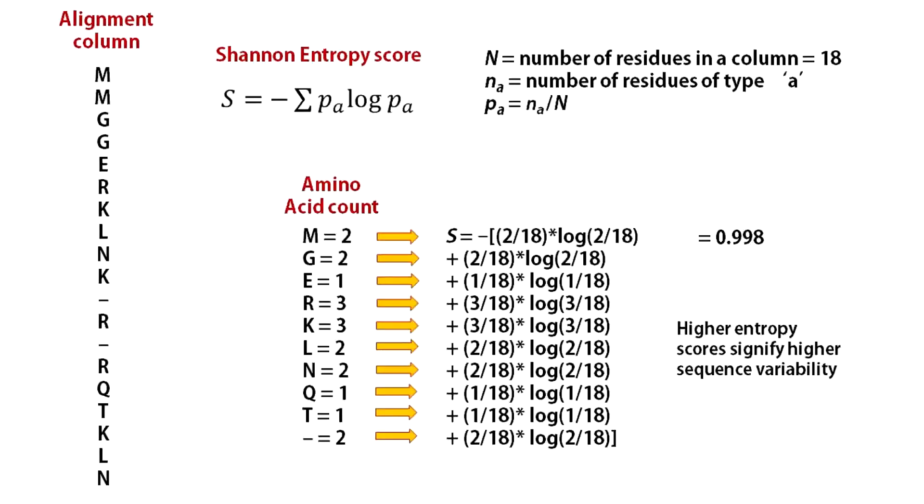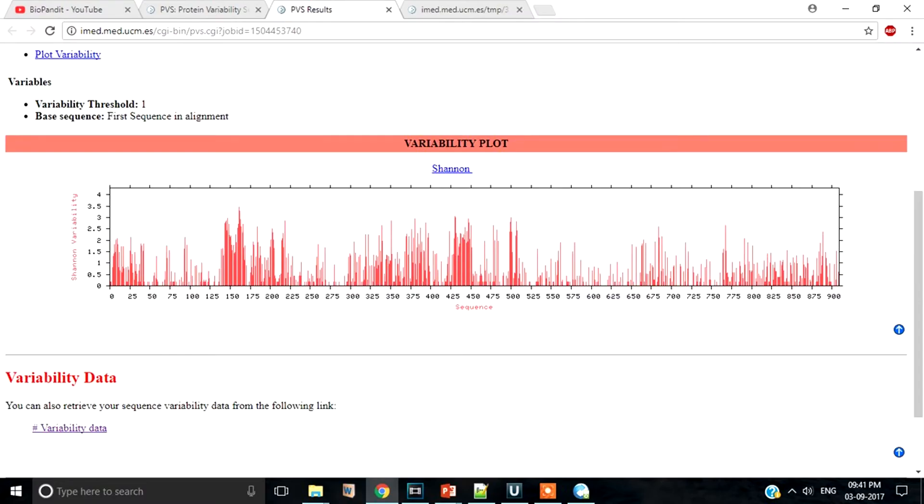What are these Shannon entropy scores and what do their values signify? You have an alignment column. You have amino acids and gaps. You compute the number of different amino acids in a column. This is your equation for estimating the Shannon entropy scores. The concept of Shannon entropy originates from information theory. Simply speaking, if there are many different types of amino acids present in the column there is a high entropy. In other words, this score is designed in such a way that higher scores signify higher sequence variability.